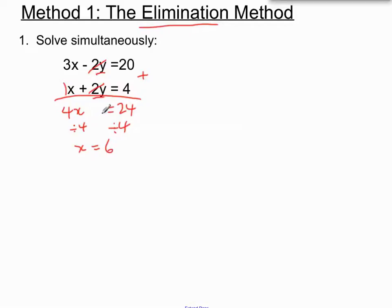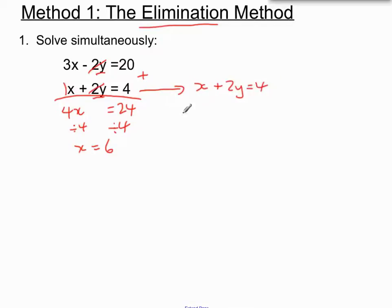Now when we get one solution to our simultaneous equations, we will pick the easier of the two equations that we started with and substitute in. Instead of an x, we're going to put a 6. So using our original equation x plus 2y equals 4, if we replace x with 6, we will get 6 plus 2y equals 4. And we'll solve that equation.